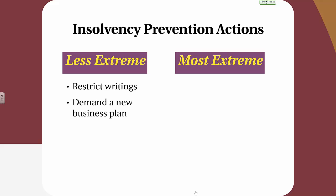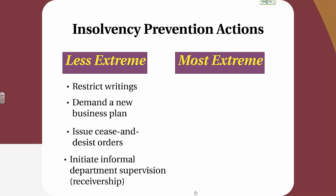The next more extreme step would be to issue cease and desist orders, where the insurance department actually requires the insurer to completely stop writing in a line of business, territory, or possibly overall. Next, the department could initiate informal department supervision or receivership, where the insurance company essentially maintains its staff but the department of insurance comes in and becomes the supervisor of all operations. The cease and desist orders and informal department supervision can be interchangeable in terms of their extremes, and a department might do either or both.